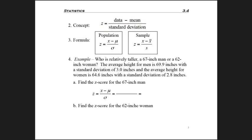So here's an example. Who is relatively taller? A 67 inch man or a 62 inch woman? So we know the 67 inch guy is taller than the woman. But relative to men, how does he compare versus the woman who's 62 inches? Remembering that 60 inches is 5 feet. So we're talking about a guy who's 5'7", versus a girl who's 6'2". The average height for men is 69.9 inches with a standard deviation of 3 inches. And the average height for women is 64.6 inches with a standard deviation of 2.8 inches. So in both cases, we can see the people we're studying are below average, but how do they still compare?